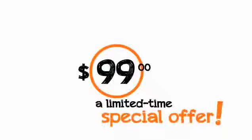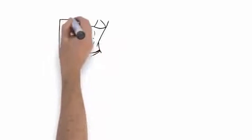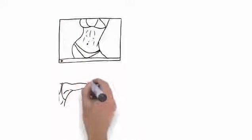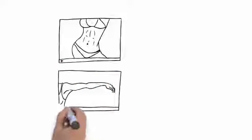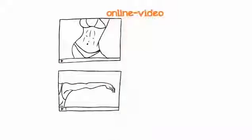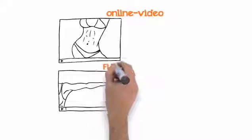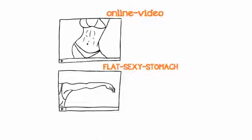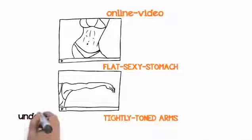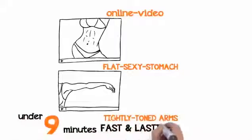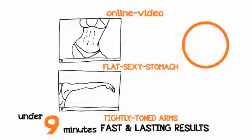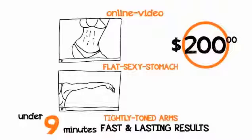But before I show you how low, I want to give you something else as well. Many women have asked for help with toning and tightening the tummy area and their arms. So I've created two laser-targeted home exercise videos which you get today for free. The first one is Flat Sexy Stomach and the second one is called Tightly Toned Arms. Both are under nine minutes in length and they deliver fast and lasting results. Those two online videos alone are worth $200. But today, you don't pay a penny for them.